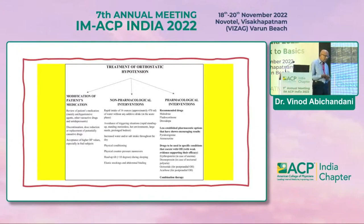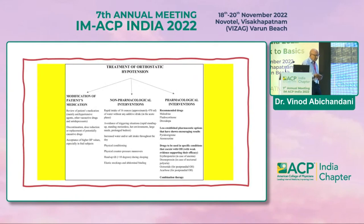Non-pharmacological interventions include rapid intake of around 500 ml of plain water, avoidance of triggers like rapid standing, standing motionless, hot environments, large meals, and prolonged bed rest. Increasing water and salt intake throughout the day is beneficial. Physical conditioning, physical counter-pressure maneuvers, head-up tilt more than 10 degrees during sleep to avoid supine hypertension, and elastic stockings and abdominal binding are also recommended.